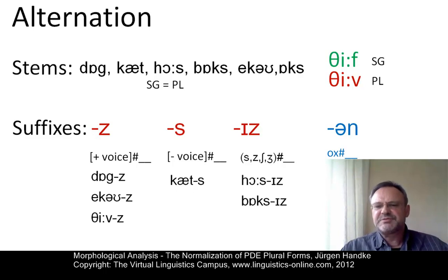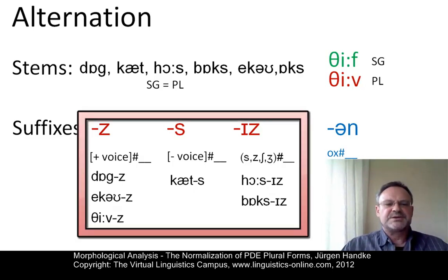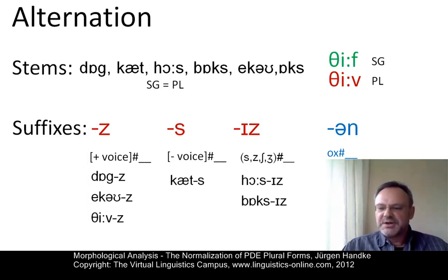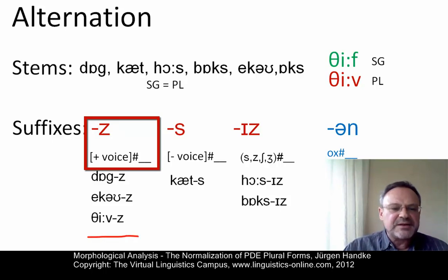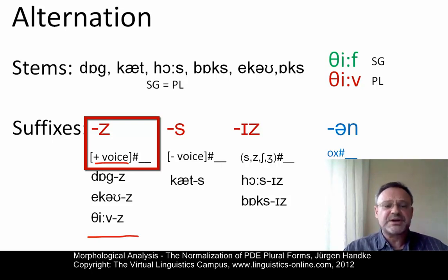Two of these involve a stem change, so this is a very special case. Let's concentrate on the situation with the voiced alveolar fricative Z, the S, and the IZ. Looking at their distribution: the voiced alveolar fricative occurs after all those stems that are voiced before the word boundary — dog, echo, where the final vowel is voiced of course, and thief.